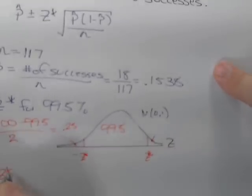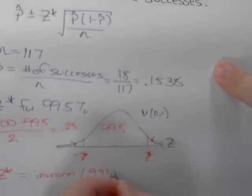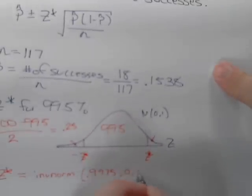So to find z-star, it's going to be equal to inverse norm. It's going to be 0.9975, since a quarter percent and a half makes 75 and then 0.1.